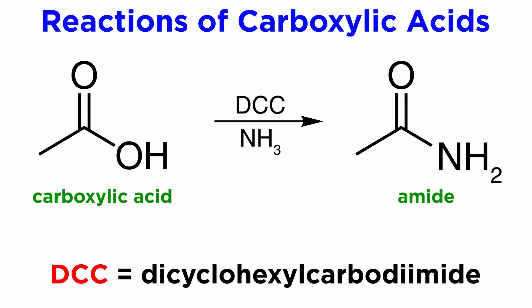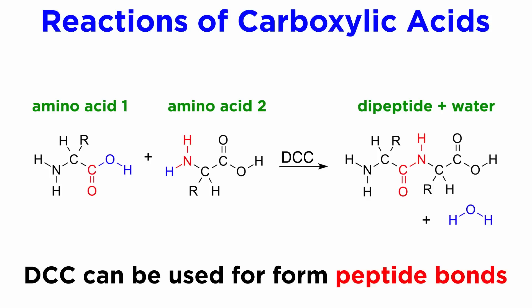Carboxylic acids can be converted into amides by using dicyclohexylcarbodiimide, or DCC, plus an amine. This is a key technique for generating peptide bonds between amino acid residues in the laboratory.